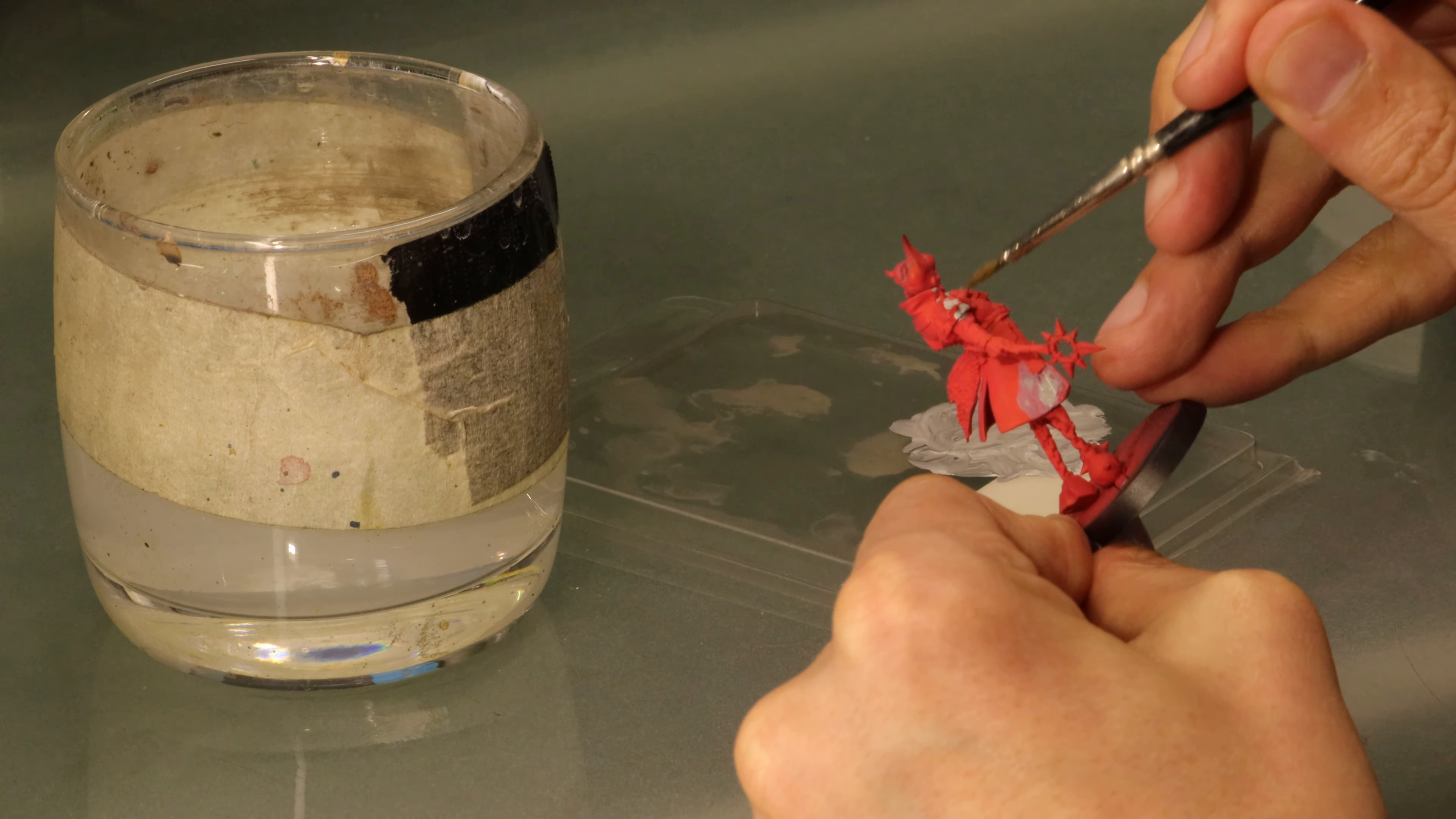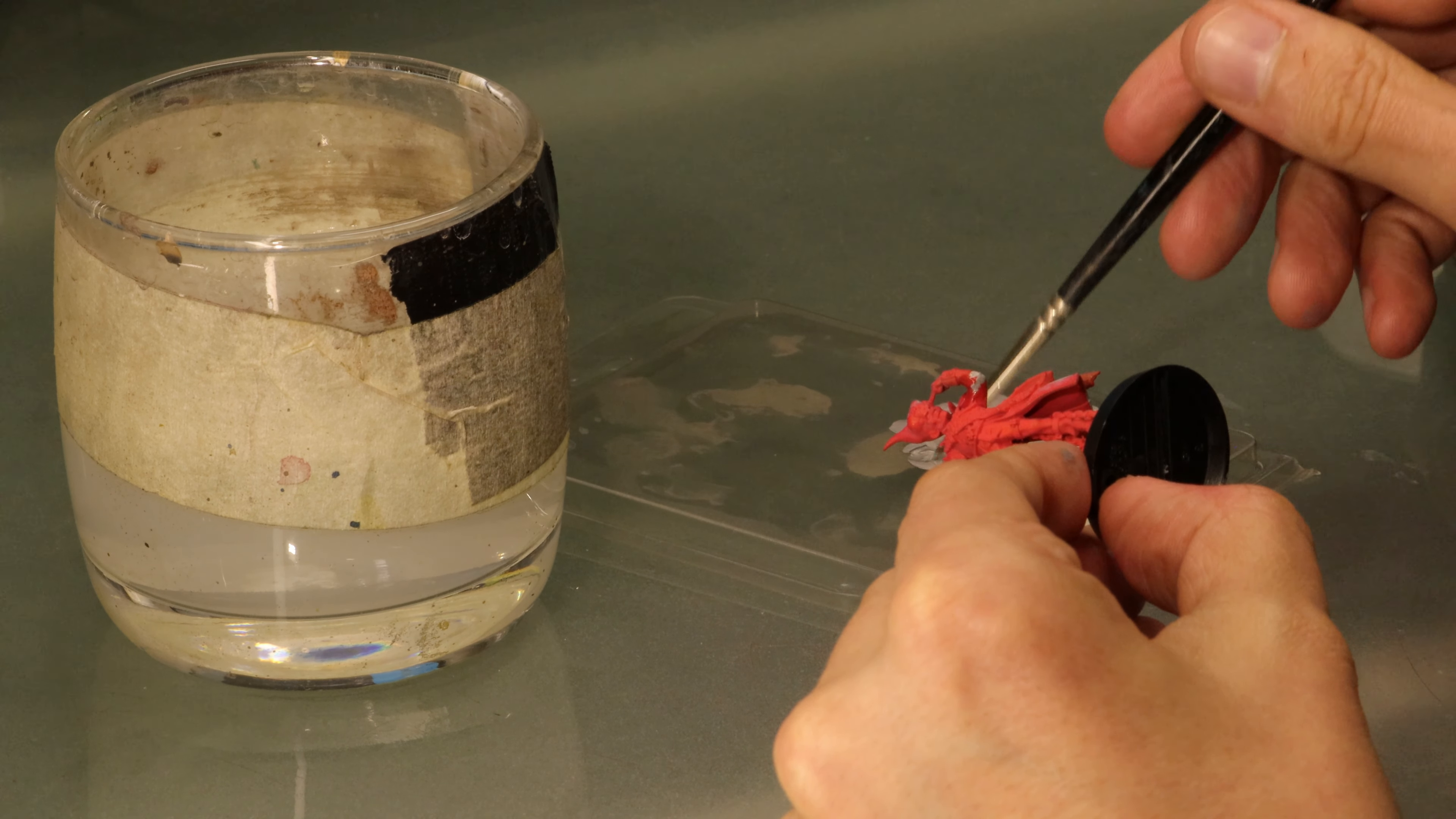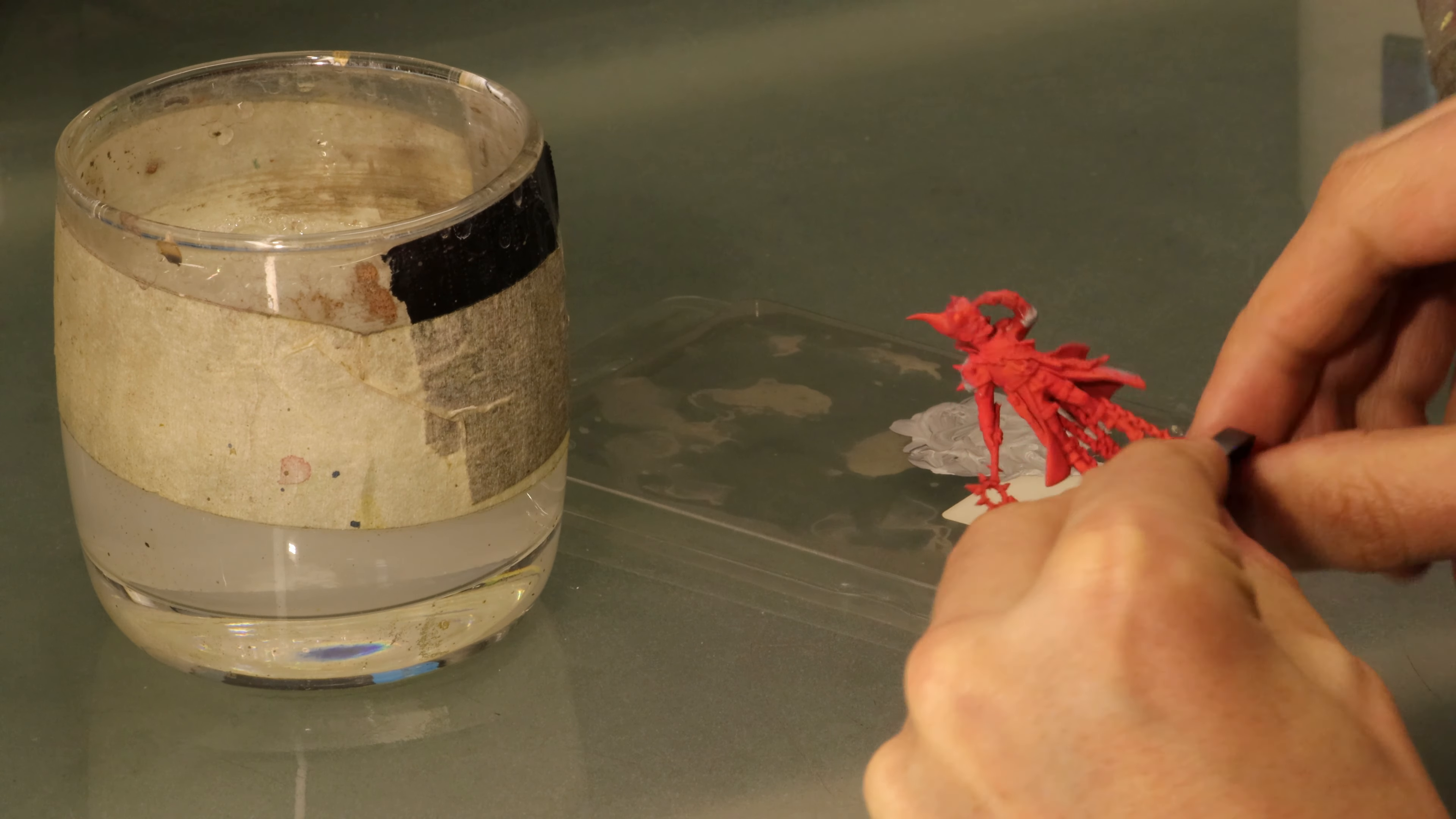This works a lot like gap filling with the goo. First we wet the surface with water, then put some of the gesso over top of the gap, and finally with a wet brush just feather out the edges. And you can do multiple coats of this until it's smooth. This is also quite good for filling layer lines on 3D prints.